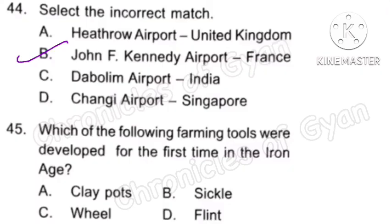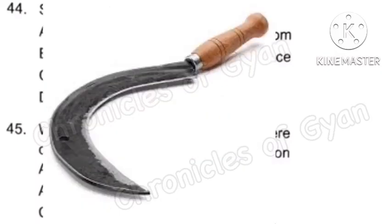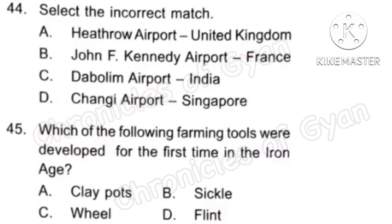Question 45: Which of the following farming tools were developed for the first time in the Iron Age? The correct answer is Option B, Sickle.